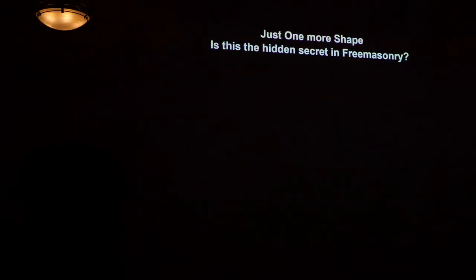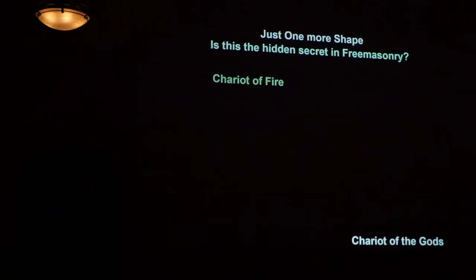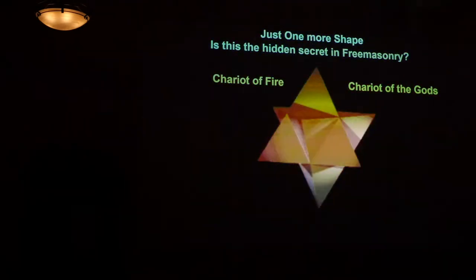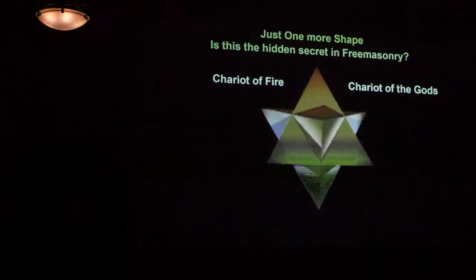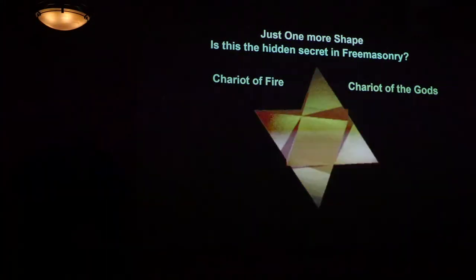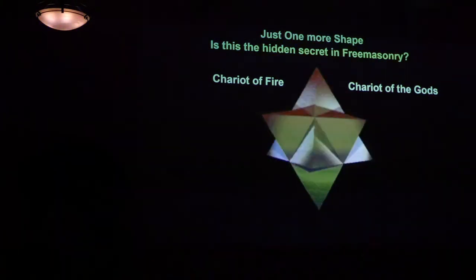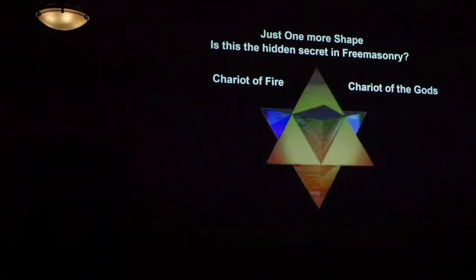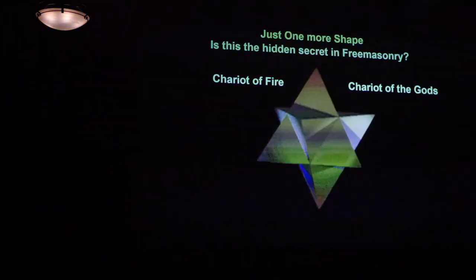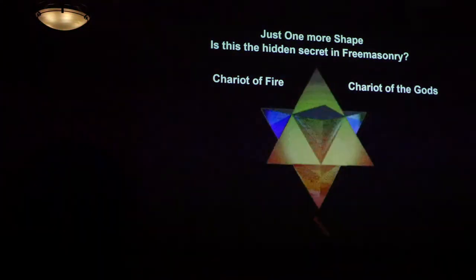So just one more shape. Is this one of the hidden secrets in Freemasonry? This shape has been known by many names, including the Chariot of Fire, the Chariot of the Gods, a wheel within a wheel, described in the Old Testament book of Ezekiel. This is said to be a divine light vehicle used by ascending masters to connect with higher realms. The symmetric form is called the stellar octangula or the star tetrahedron. Or you could look at it as a three dimensional Star of David. It also has another name. It's known as Merkaba.